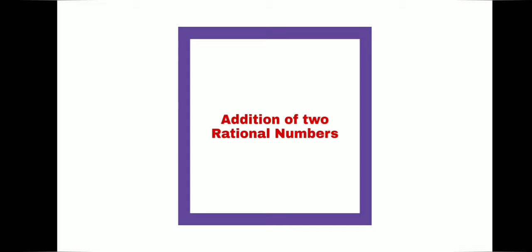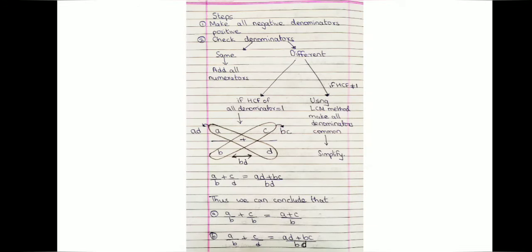Before adding any two given rational numbers, you have to first check whether the denominators are the same or not, and whether they are positive. If any of the denominators is negative, or both the denominators are negative, your first step will be to make them positive.